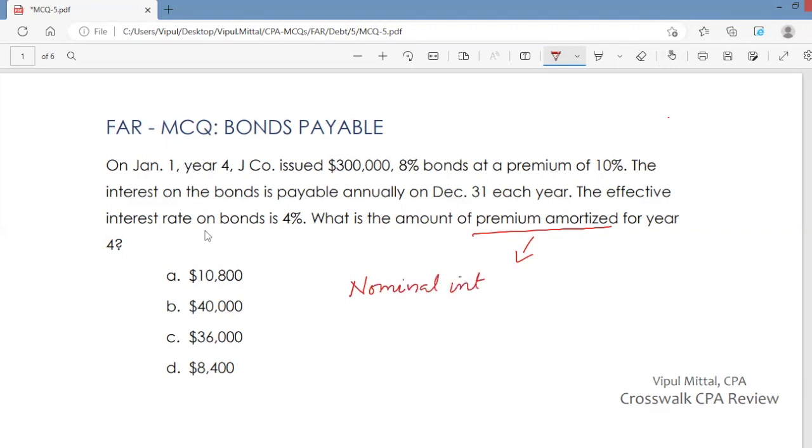You also call this nominal interest coupon interest. So, it is the difference between nominal interest and interest cost, or the amount of interest that you expense.